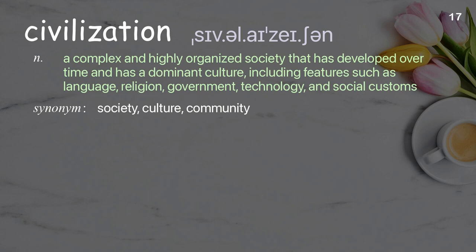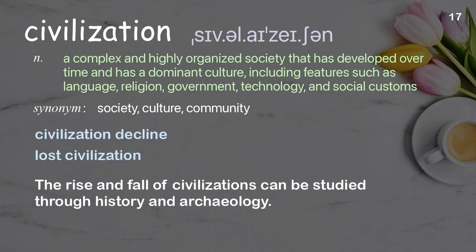Civilization: a complex and highly organized society that has developed over time and has a dominant culture, including features such as language, religion, government, technology, and social customs. Examples: civilization decline, lost civilization. The rise and fall of civilizations can be studied through history and archaeology.